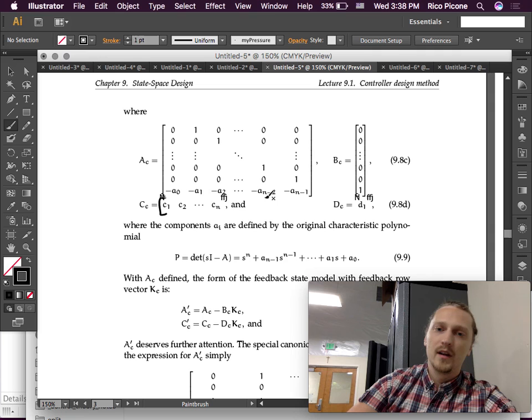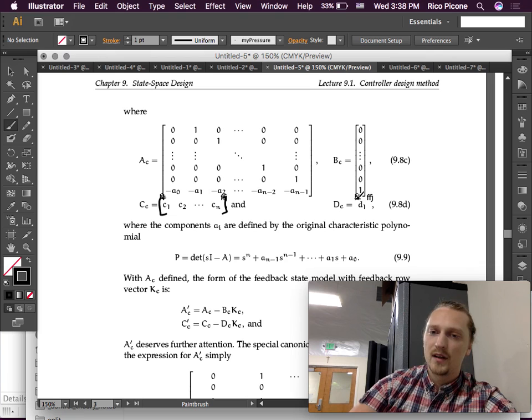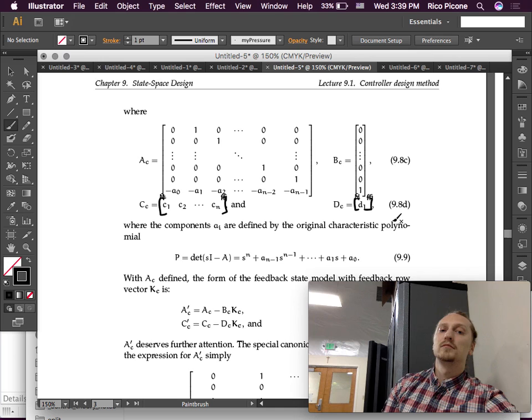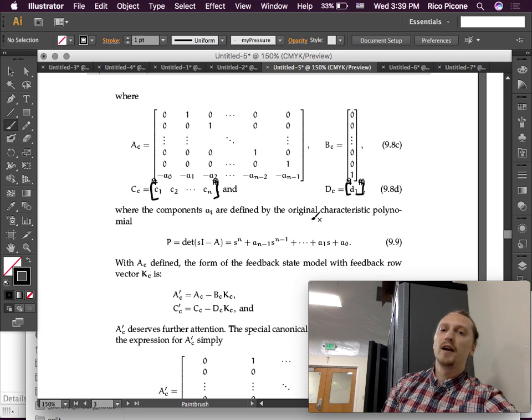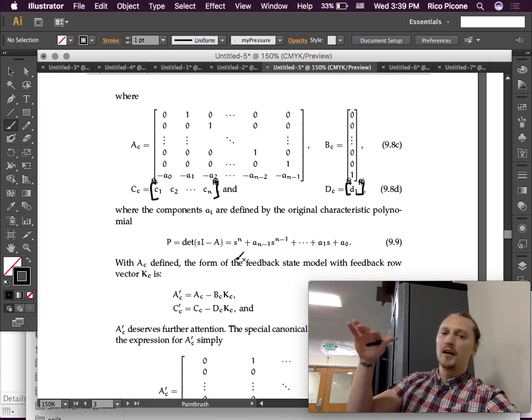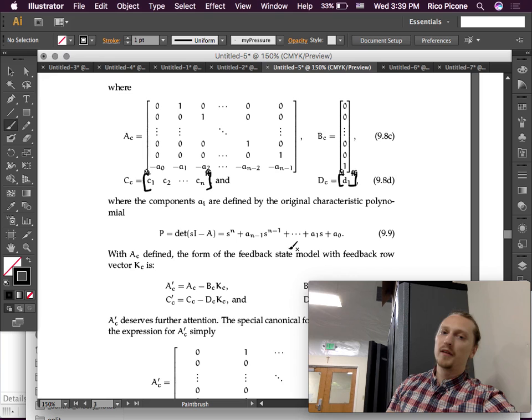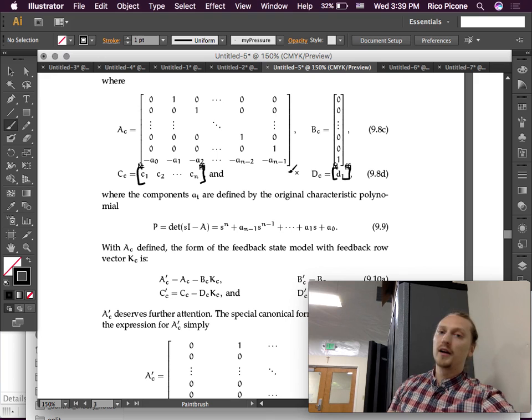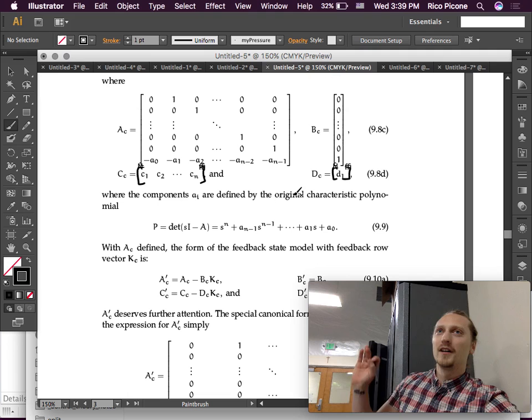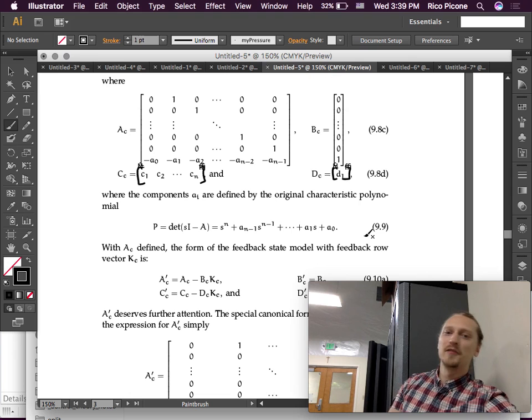Where, as usual, whenever we have a phase variable canonical form, our A matrix looks like this, our B matrix looks like this, our C matrix looks like this, and our D matrix looks like that. So, AIs are defined by the original characteristic polynomial, which is the determinant of SI minus A, because we said the determinant, the characteristic polynomial is invariant, right? It doesn't vary depending on the basis you're in. So, we have that characteristic polynomial, and so, therefore, we have all of the coefficients that go into our A matrix. So, our A matrix, our phase variable canonical form, our A matrix is done. Bam! Right away. Easy to find.